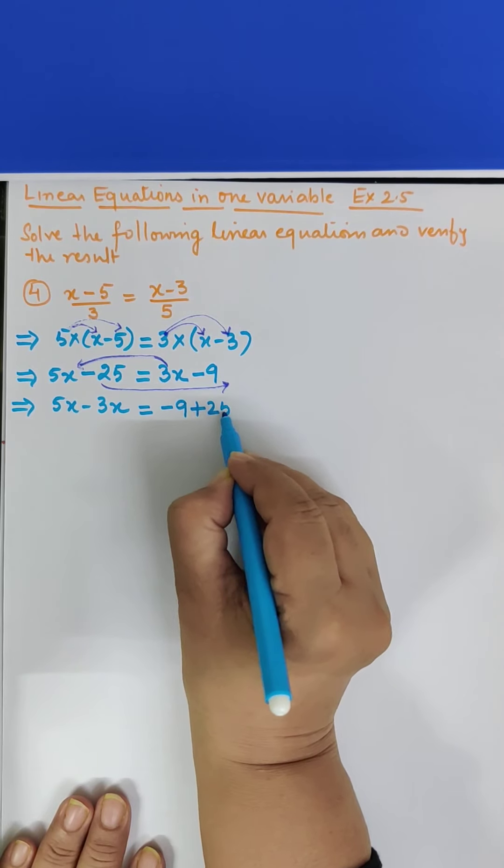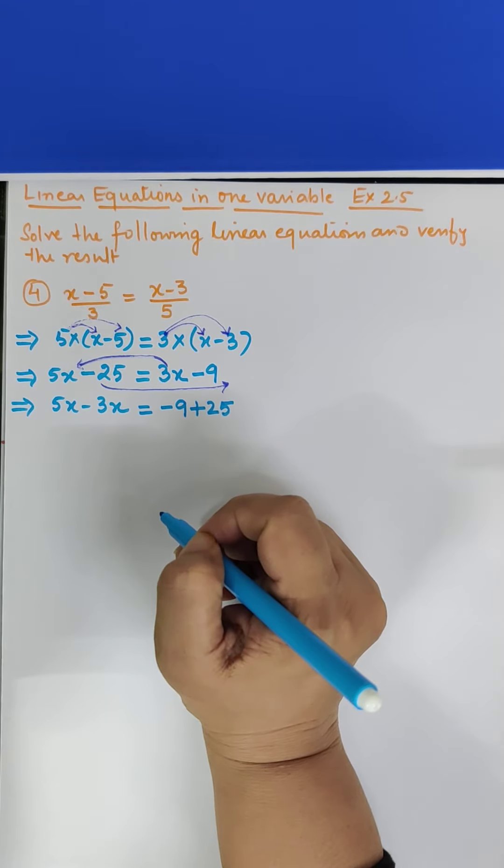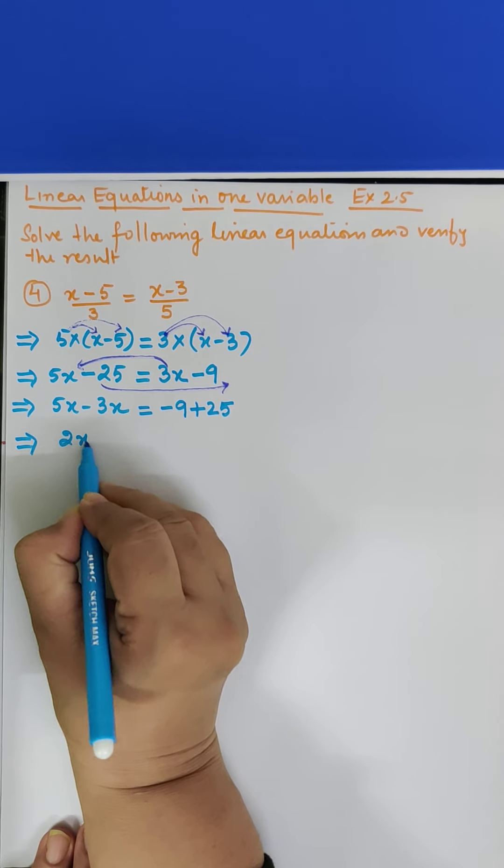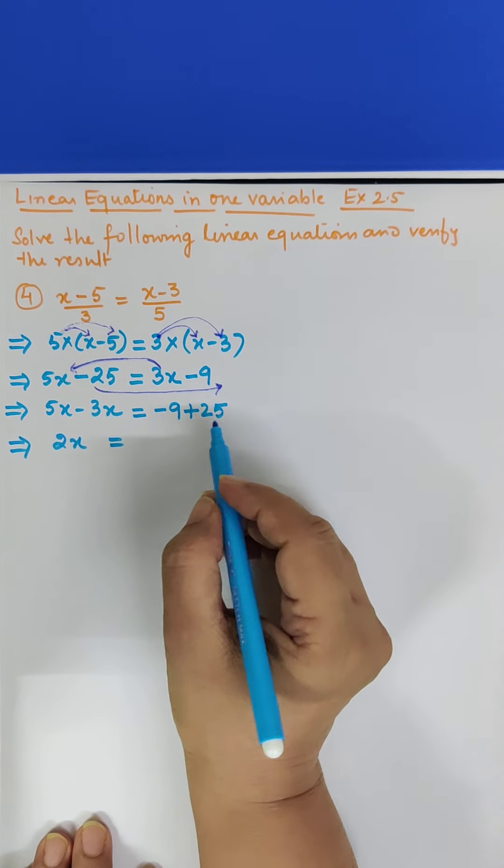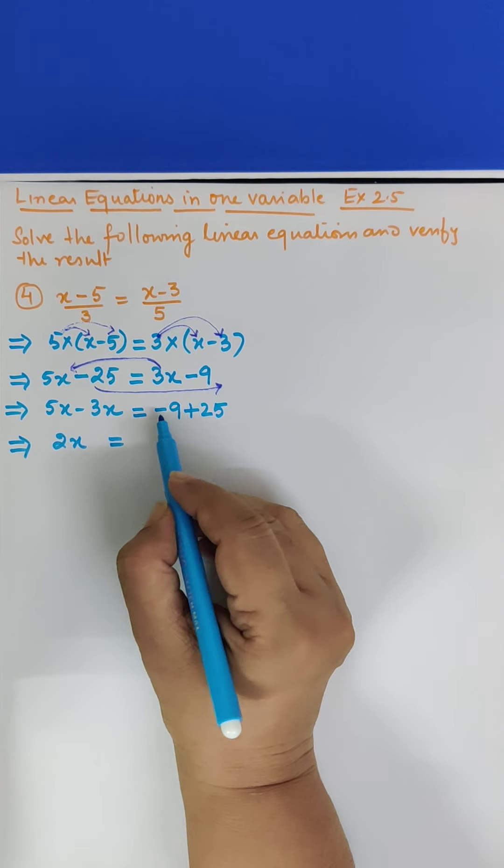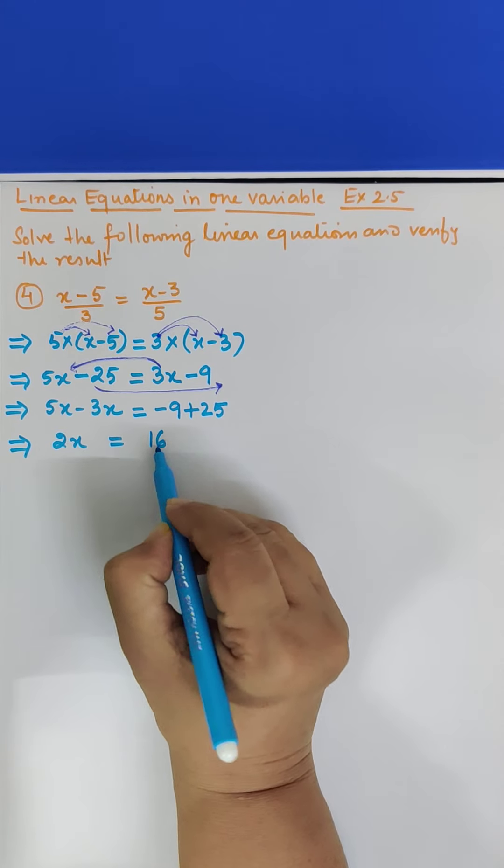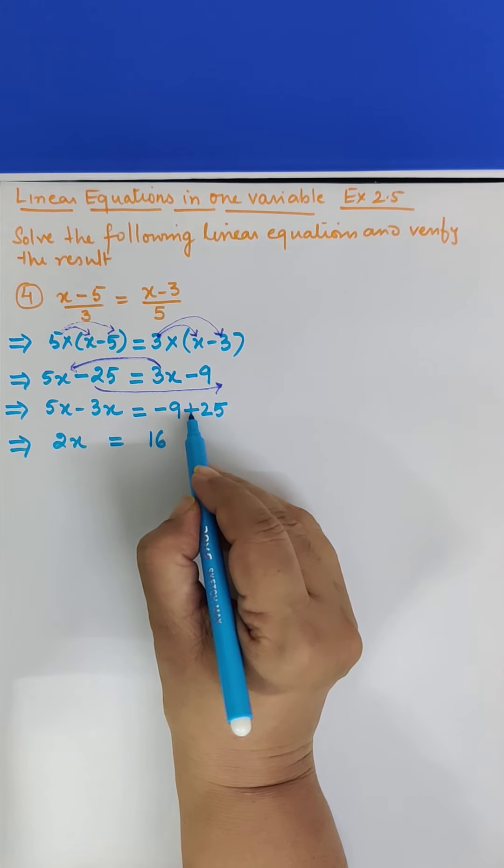Plus 25 is equal to. Here this is minus sign as it is. This is minus 25. 25 aur 9 ko subtract karte hain to aata hai 16 bada number 25, sign is plus.